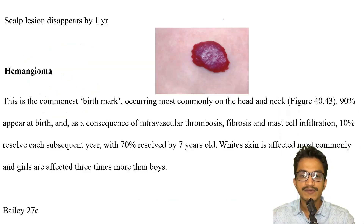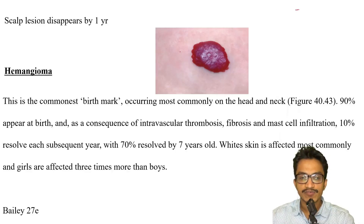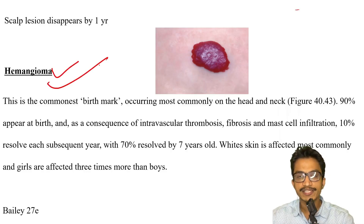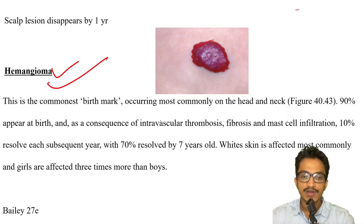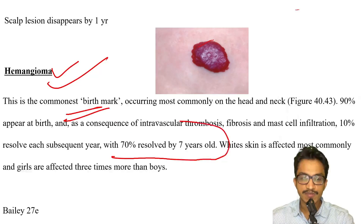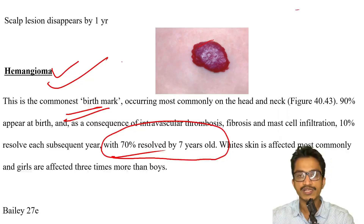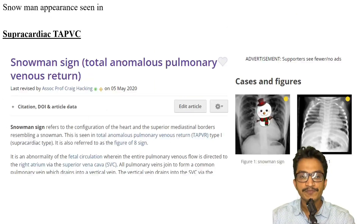If a figure is given of a lesion described as disappearing by one year of age, it is usually pointing towards hemangioma or capillary hemangioma — the commonest birthmark, which usually resolves by seven years. Even if one year is given in the question, the answer should be hemangioma.